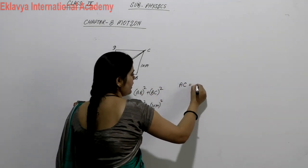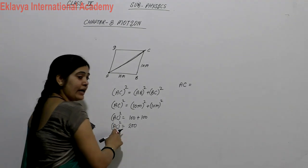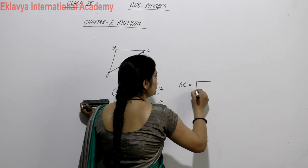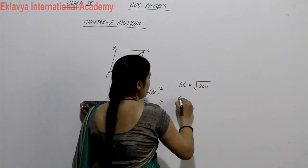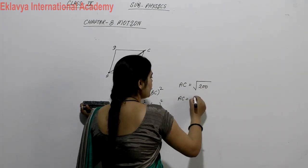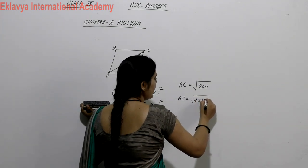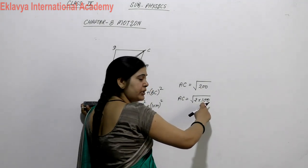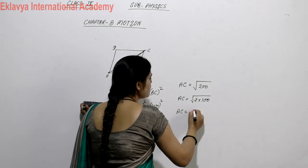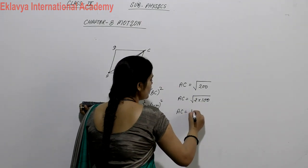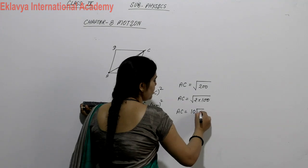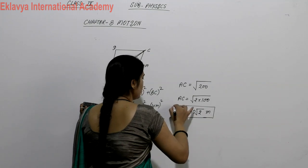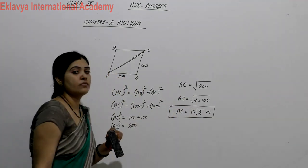AC² = 200. To find AC, take the square root: AC = √200. This can be written as √(2 × 100). The square root of 100 is 10, so AC = 10√2 meters. That is the displacement.